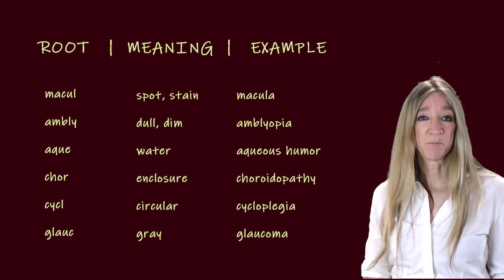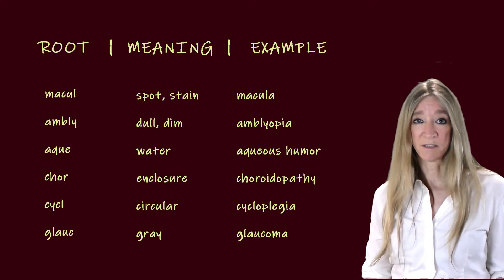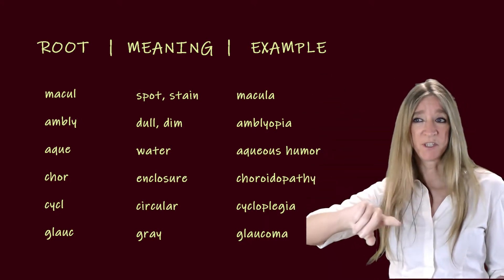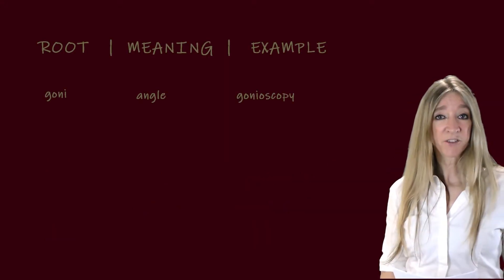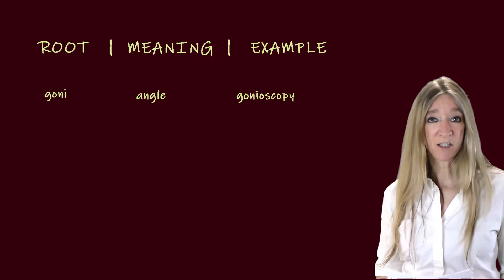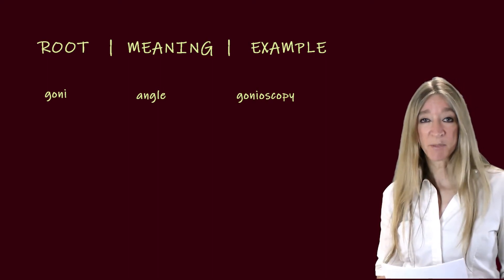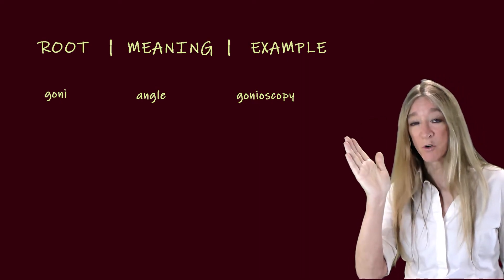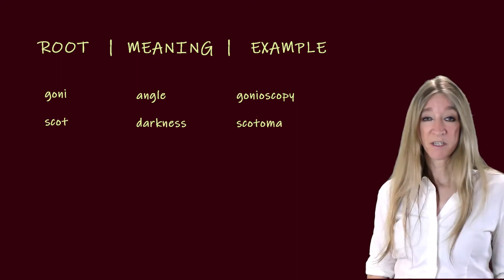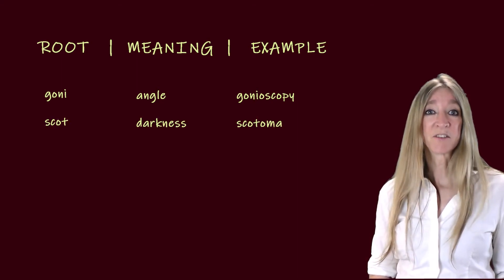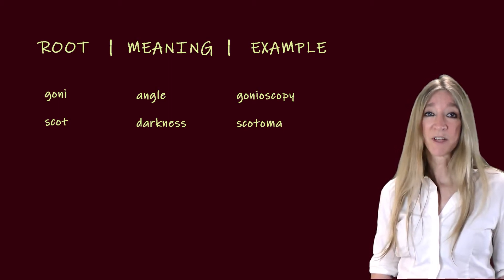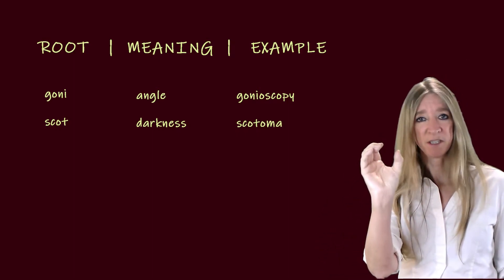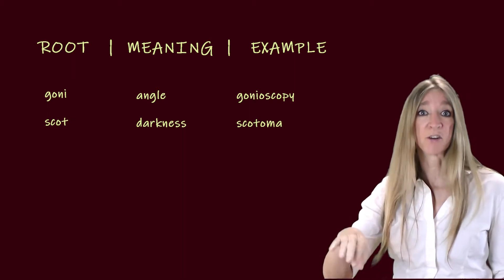The next root, glauc, meaning blue-gray or blue-green. An example is glaucoma, which is an eye disease in which blue halos seem to form around sources of light. The next root, goni, meaning angle. A gonioscopy is the examination of the anatomical angle between the iris and the cornea, which is also called the iridocorneal angle. The next root, scot, means darkness. An example: scotoma — this is the loss of vision in an area within a larger healthy area of vision.